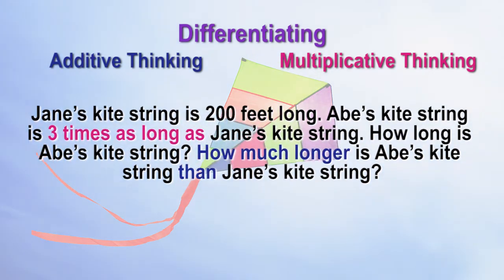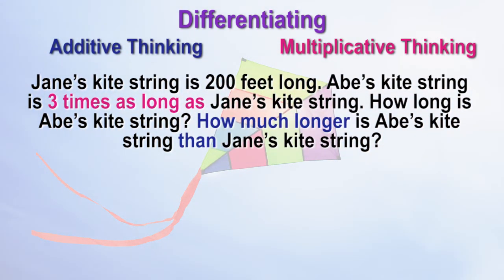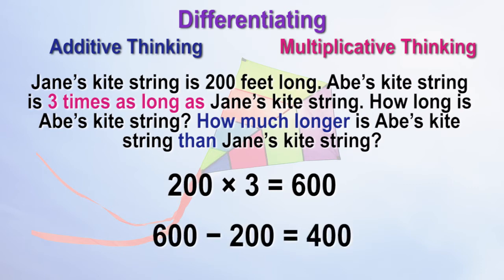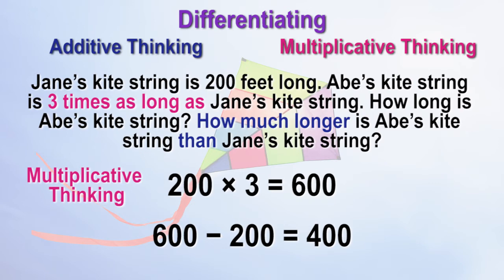Using the keywords in the statements about the kite string's length, we can determine Abe's kite string by multiplying 200 times 3, which is 600 feet long. We can find out how much longer Abe's string is by subtracting 200 from 600 — Abe's string is 400 feet longer than Jane's. Determining the length of Abe's kite string used multiplicative thinking, and determining the difference in the lengths used additive thinking.